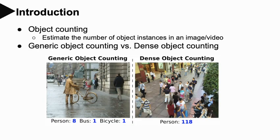Object counting is a fundamental task in computer vision. It aims to estimate the number of object instances in an image or video. Existing methods can be divided into two groups: generic object counting and dense object counting. The former conducts counting in everyday images, and the latter counts dense objects that can have up to thousands of instances.